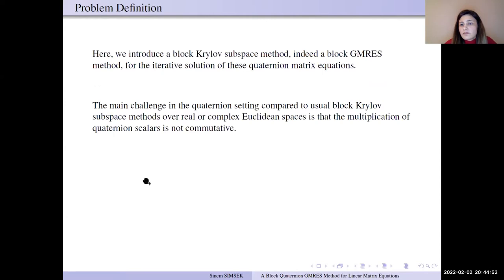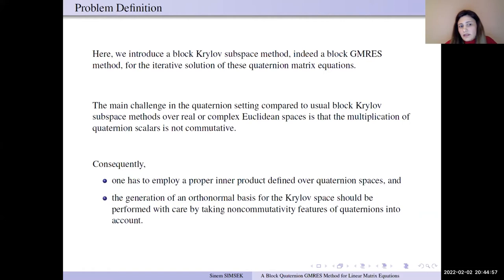Here we introduce a block GMRES method for these matrix equations. The main challenge in quaternion is that the multiplication of the numbers is not commutative. Consequently, one has to employ a proper inner product defined over quaternion space, and the generation of orthonormal basis for Krylov space should be performed with care by taking non-commutativity into account.